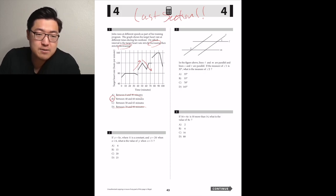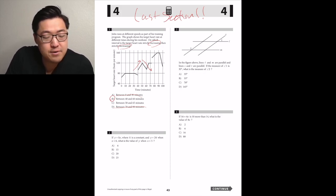If y equals kx where k is a constant and y is 24 when x is 6, what's the value? So if y is 24 and x is 6, then we have 24 is equal to 6k. So k is equal to 4. What's the value of y when x is 5? y is equal to 4x. So if x is 5, it's 20. C.